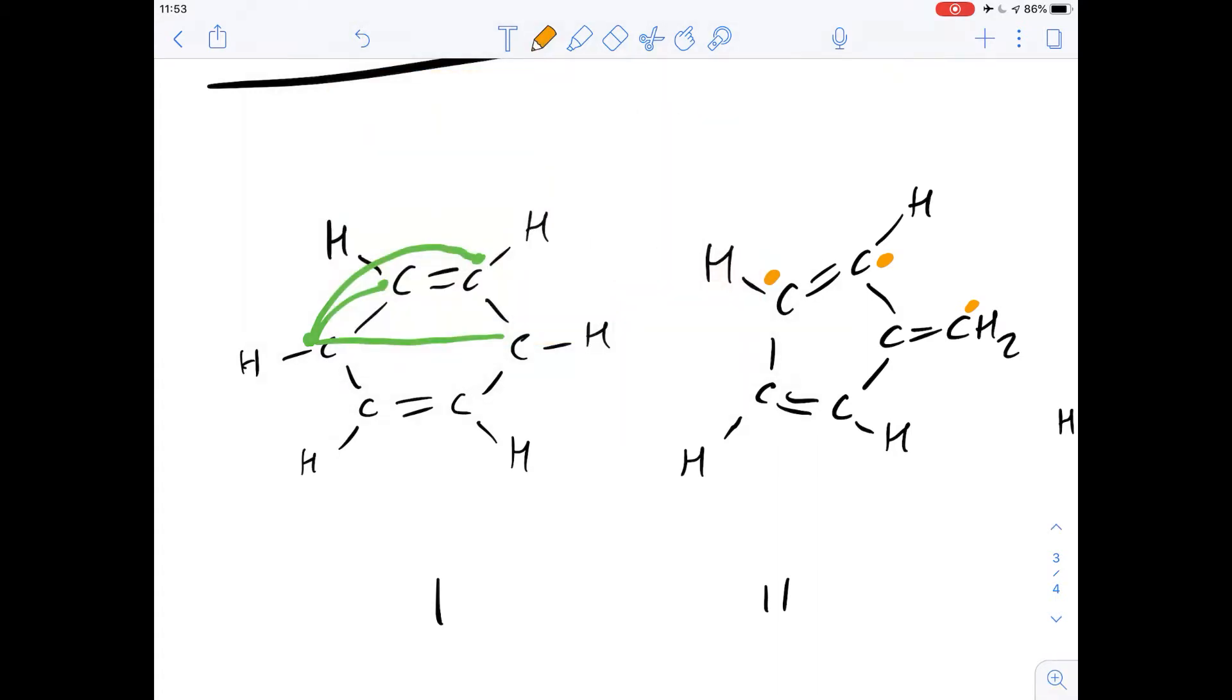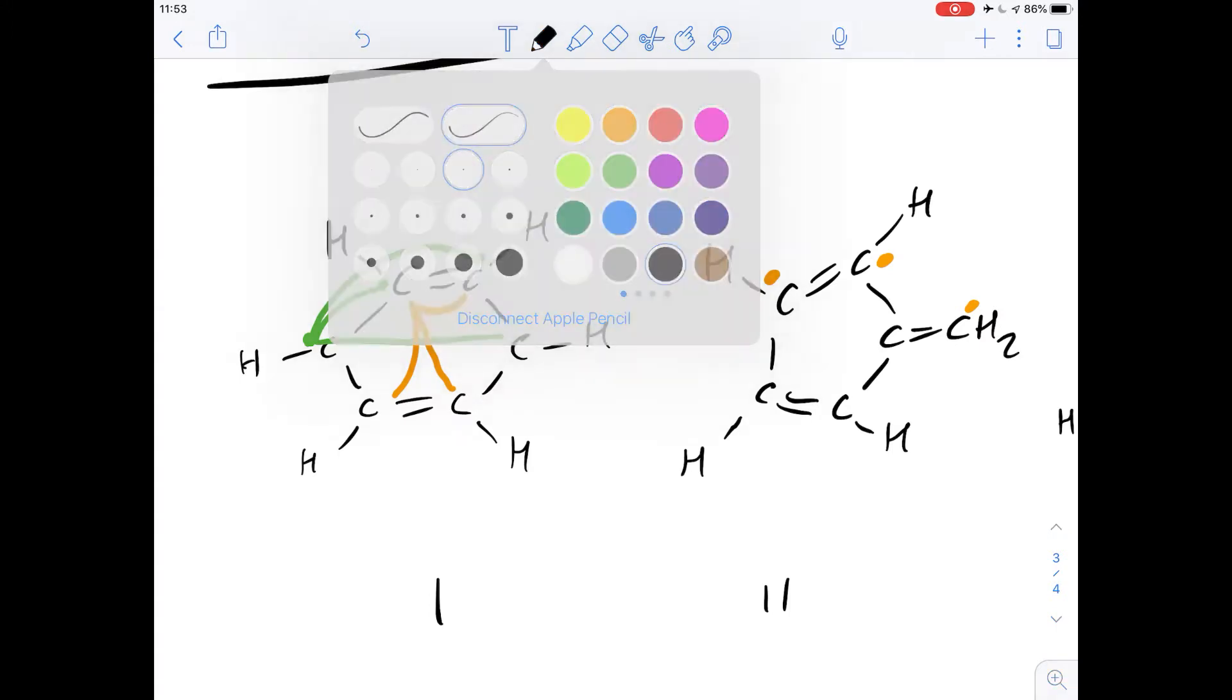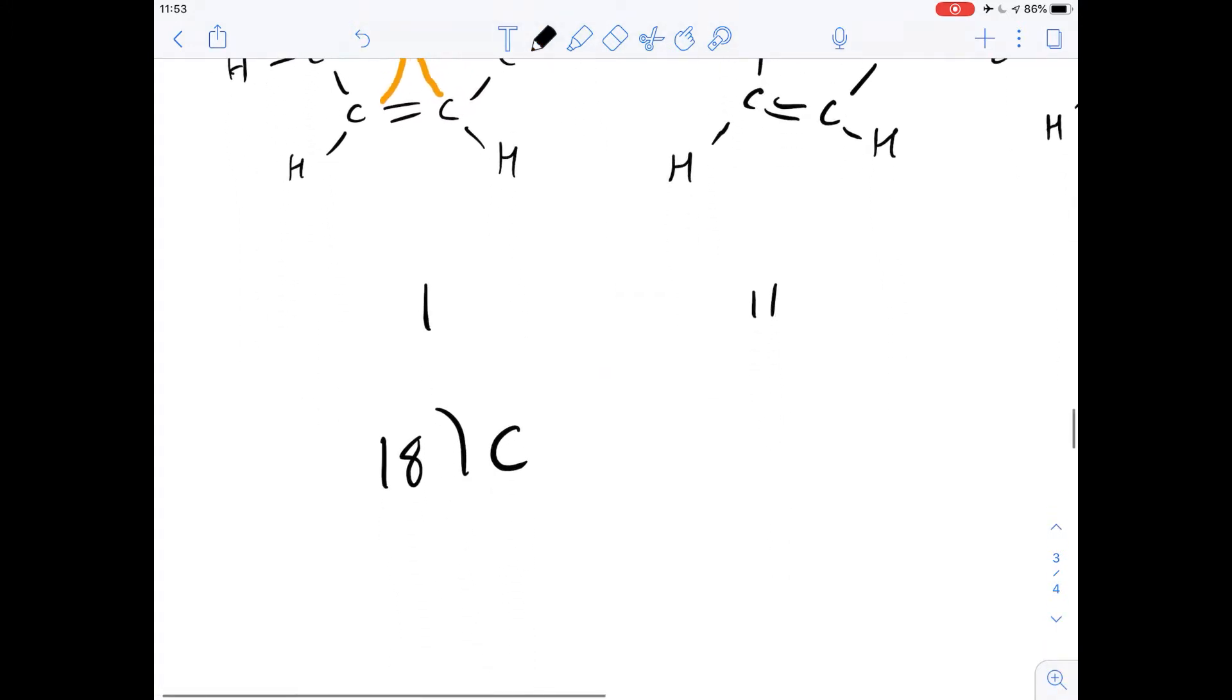What if we look at it from the perspective of one of the carbons that has a double bond? Let's choose this one. We could replace these two hydrogens, these two hydrogens, and these two hydrogens. So we know there's going to be six different isomers you can make from structure 1 by di-substitution. Therefore the answer for number 19 is D.